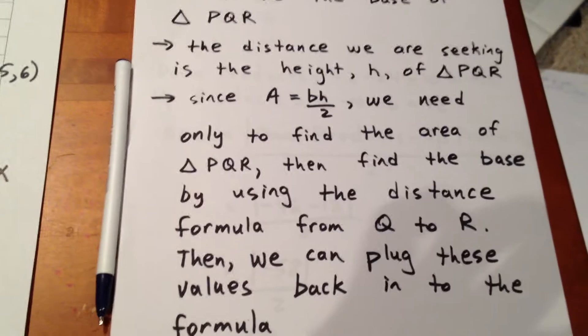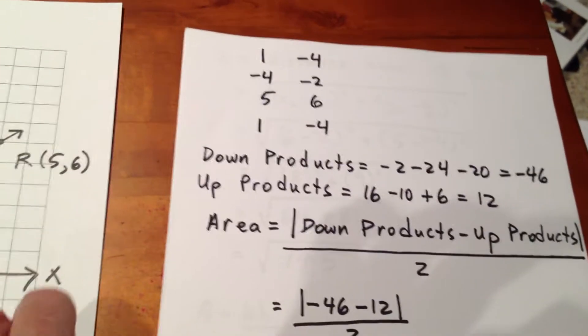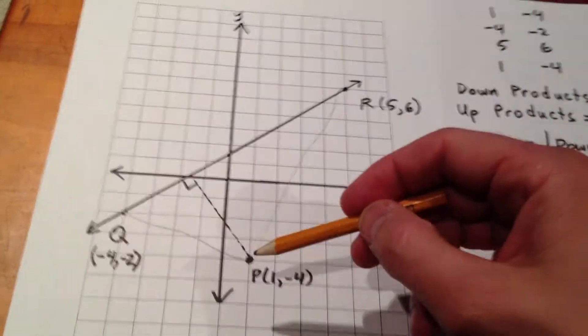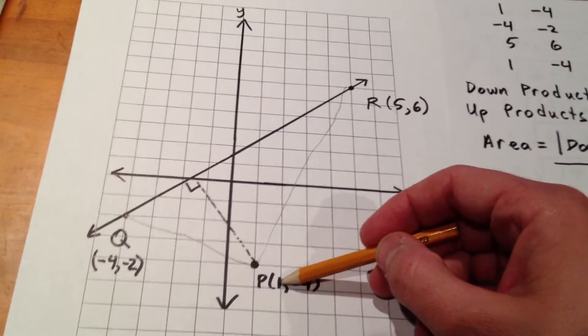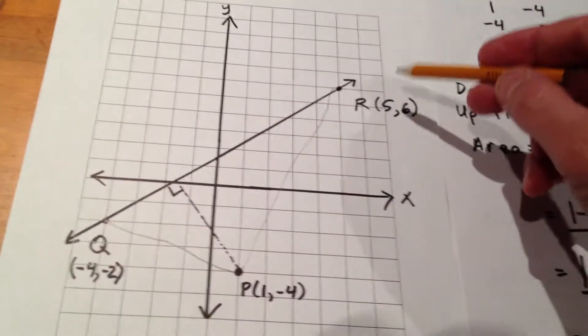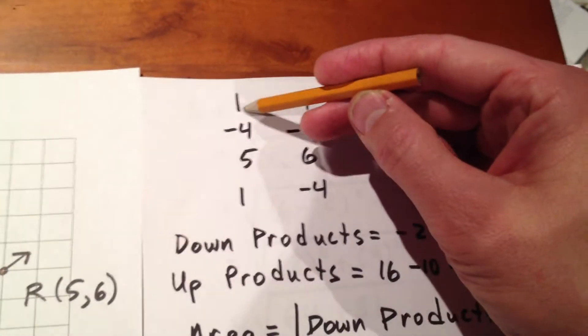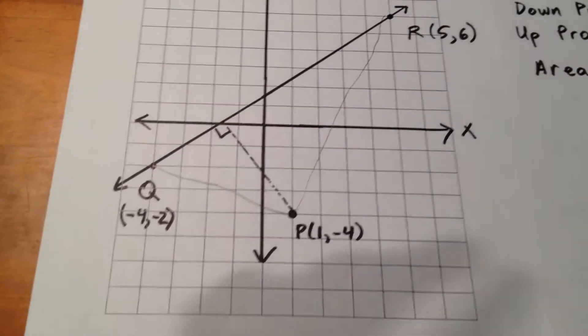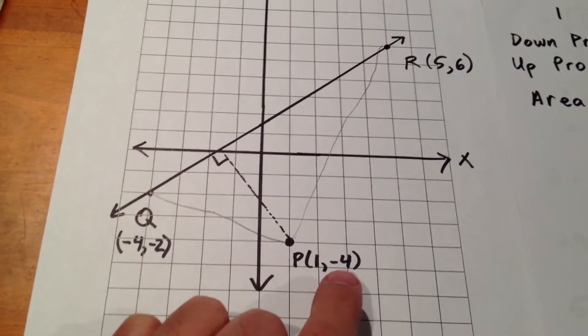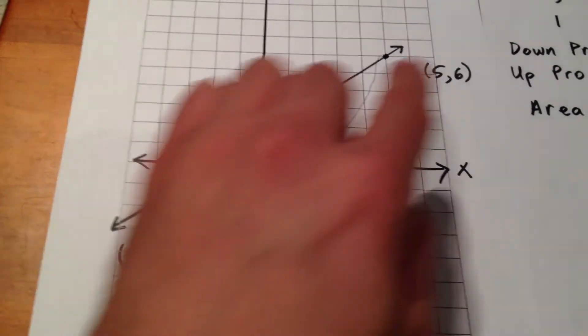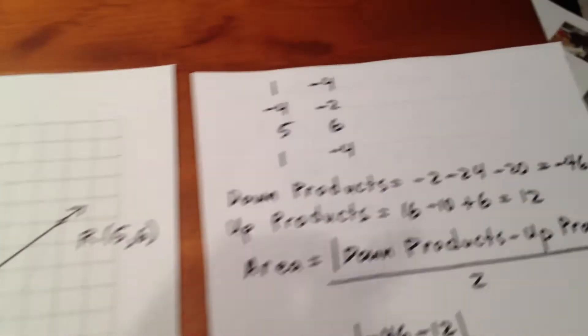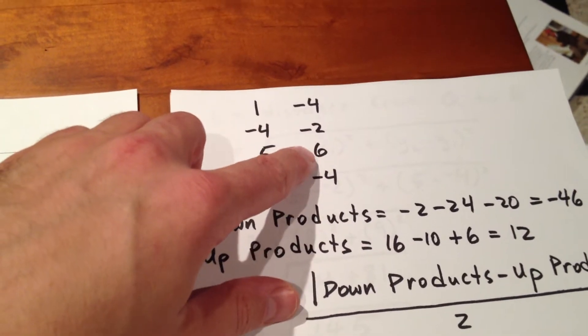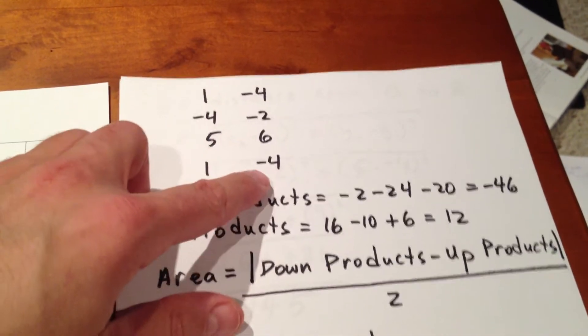Okay, well let's figure out what the area of the triangle is. To determine the area of the triangle, we use the down products minus the up products. So thinking of PQR as three points of a triangle, our X values are 1, negative 4, and 5. 1, negative 4, and 5. And we repeat the 1. Now, thinking of the Y coordinates of PQR, we've got negative 4, negative 2, and 6. Negative 4, negative 2, and 6. And again, we repeat the first value, negative 4.